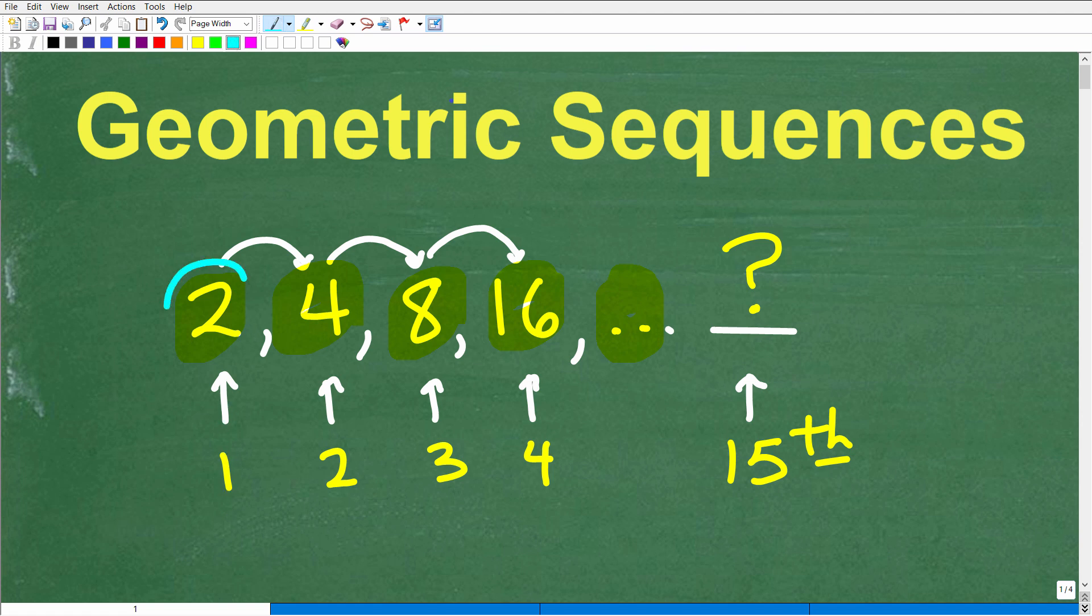So the question is, our first number in this sequence is 2, our second number is 4, our third number is 8, our fourth number is 16. What we want to know is the value of the 15th number. To be more technical, this will be the 15th term of this sequence.